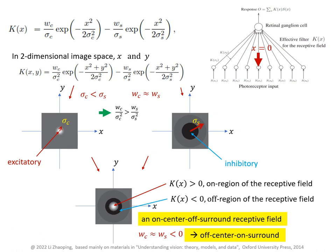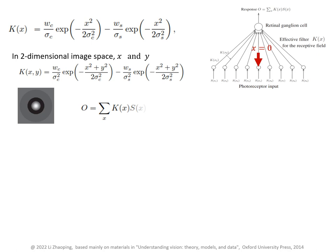Some retinal ganglion cells are off-center and on-surround, and this can be achieved by making these weights W_c and W_s negative. And these neurons should be excited by a dark spot in a bright background. We also call these two types of neurons on-center neurons and off-center neurons. And this means the neuron is turned on or turned off by a bright spot at its center.